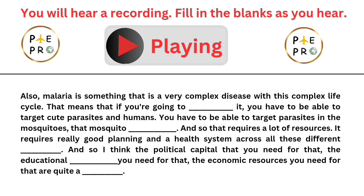Malaria is a very complex disease with a complex life cycle. That means that if you're going to eliminate it, you have to be able to target the parasites in humans, target parasites in the mosquitoes and that mosquito population. And so that requires a lot of resources and really good planning and a health system across all these different levels.